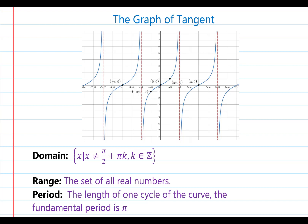So unlike sine or cosine, this is not a continuous graph. Instead, the domain is x such that — that vertical line segment means 'such that' — x cannot be equal to pi over 2 plus pi times k. Now, because we have k, we have to define k. This last part is defining k as an element of the set of integers. That Z represents the set of integers, and that symbol represents 'element of.'